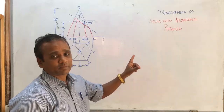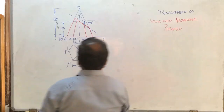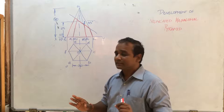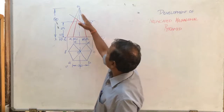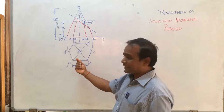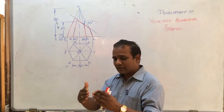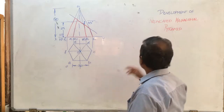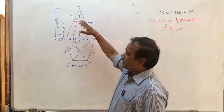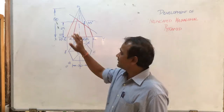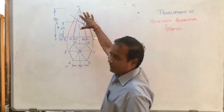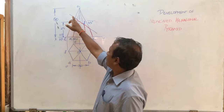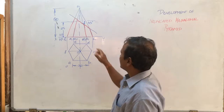We are looking at the development of a truncated hexagonal pyramid. A hexagonal pyramid can be identified when all slant edges meet at one point called the apex. The word 'truncated' means it has been cut at some distance. In this case, we have a hexagonal pyramid of 30mm side base, a height of 50mm, and a 45-degree section made at a height of 25mm.